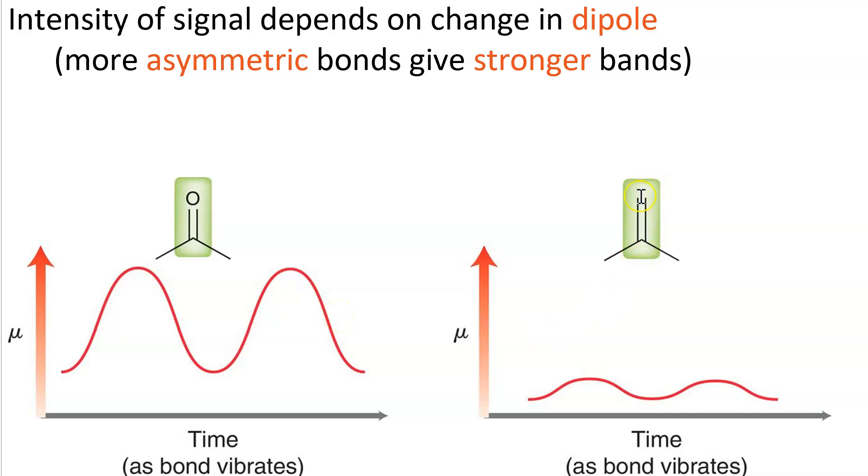For a C=C double bond, the change in dipole moment is much smaller because there is no or much less charge separation. So carbonyl signal is very high intensity. In fact, it's one of the strongest signals we're going to see. Like a sword sticking straight down in the middle of your spectrum.